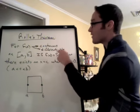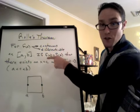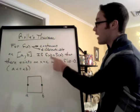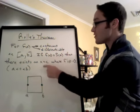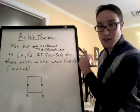It says that for f(x) continuous and differentiable on a closed interval [a,b], if f(a) = f(b), then there exists an x=c where f'(c) = 0. That's called Rolle's Theorem.